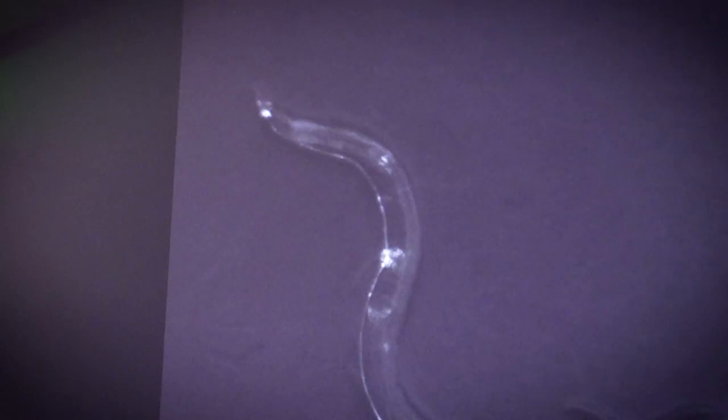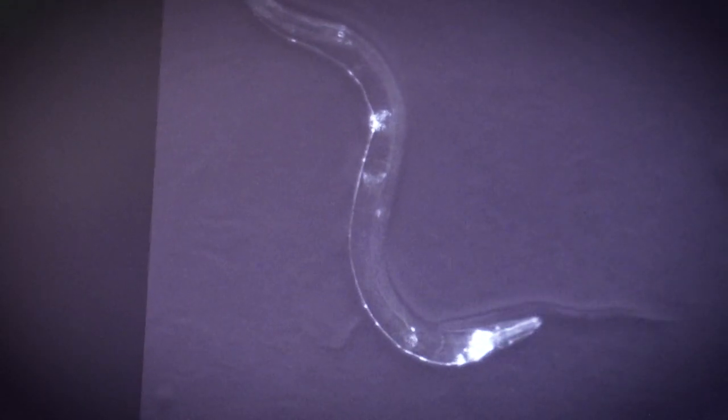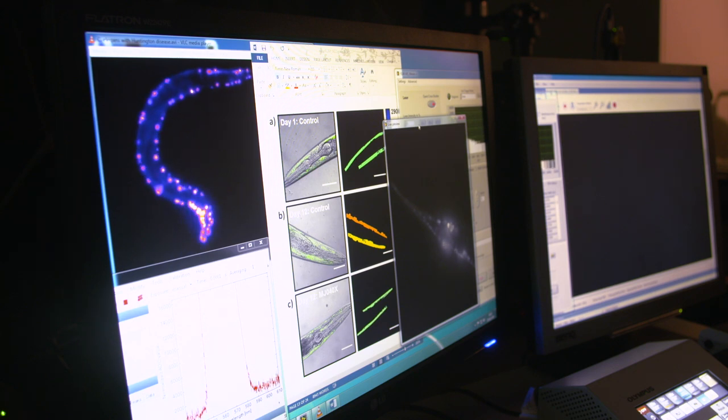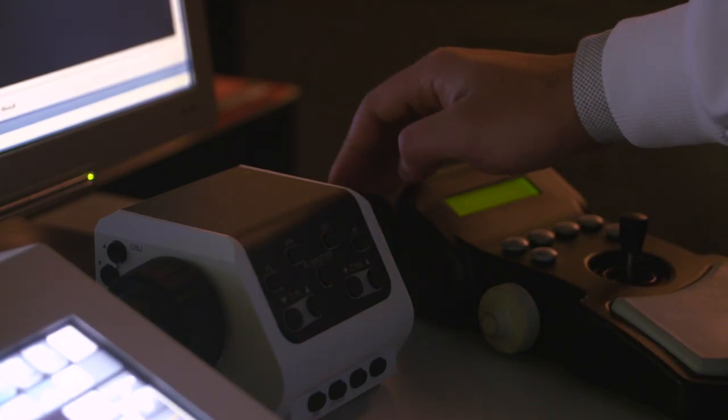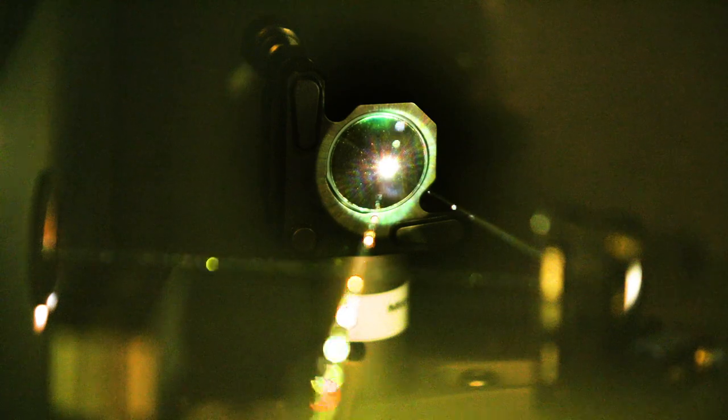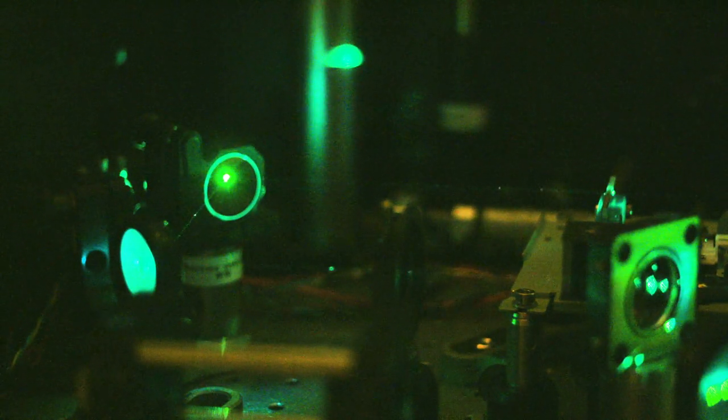When we overexpress this amyloid beta protein, which is involved in Alzheimer's disease in the muscle of the C. elegans, this prevents them from wiggling as much. So we want to use our platform to correlate the wiggle with how much protein is present and the aggregation. We're really hoping with this screening platform that we can find potential therapeutic targets. Maybe one of our compounds will one day prevent Alzheimer's disease.